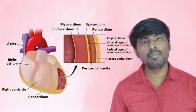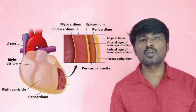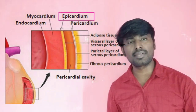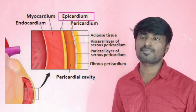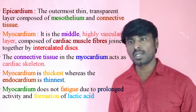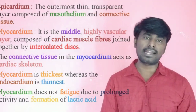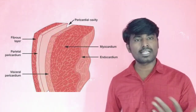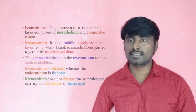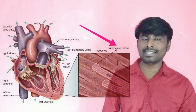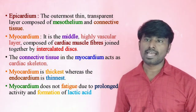What are the first ones? The outermost thin and transparent layer. It is the middle and highly vascular layer. The myocardium is joined together by intercalated disc. Cardiac muscle fiber is joined together by intercalated disc.